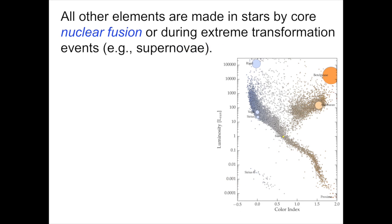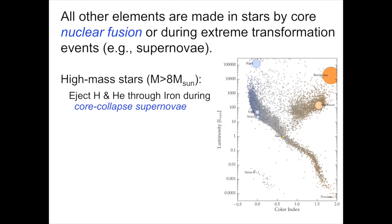All of the other elements that we see in the periodic table are made in stars by a process of core nuclear fusion or during extreme transformation events like supernova explosions. In high mass stars, those stars whose masses are greater than about eight times the mass of the sun, those stars at the end of their life will go unstable as core collapse supernovae ejecting the hydrogen and helium in their envelopes, but also enriching that material with elements made up through iron and nickel.